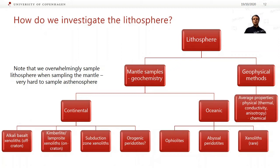This flow diagram is trying to show different types of mantle samples and methods we can use to investigate the lithosphere. On the right are geophysical methods — and this isn't a geophysics course so I'm not really going to talk much about them, but we will reference them from time to time. The nice thing about geophysical methods is they give you wide-scale average properties — you can get physical information like temperature, the thermal state of the lithosphere, conductivity, and mineral alignments or anisotropy.